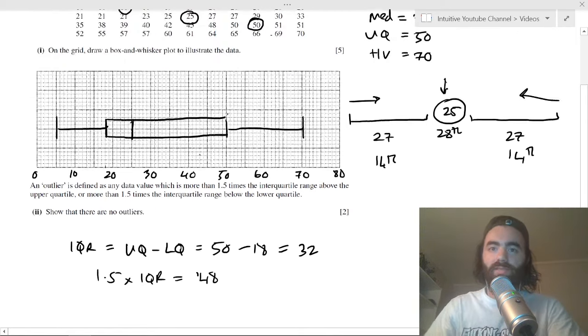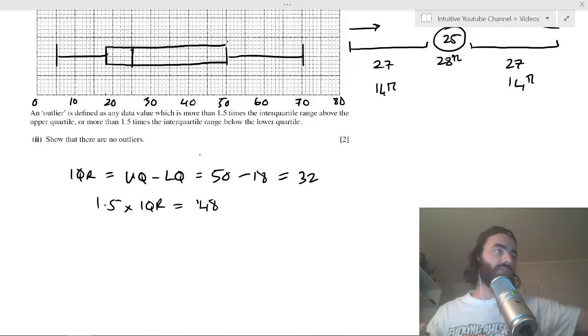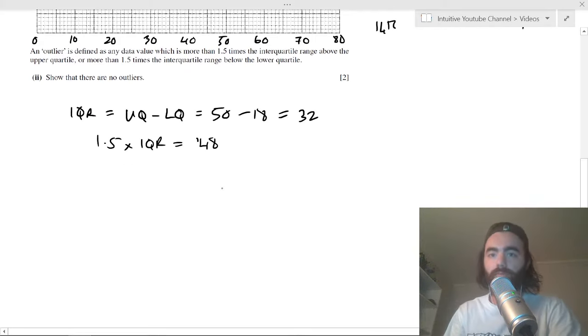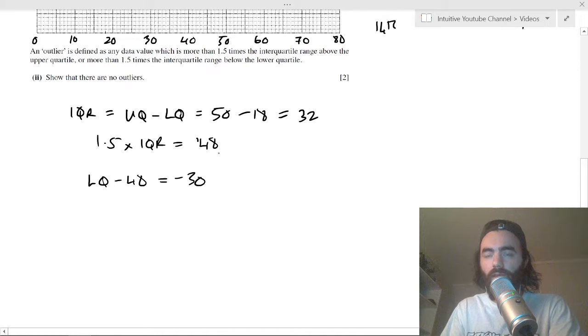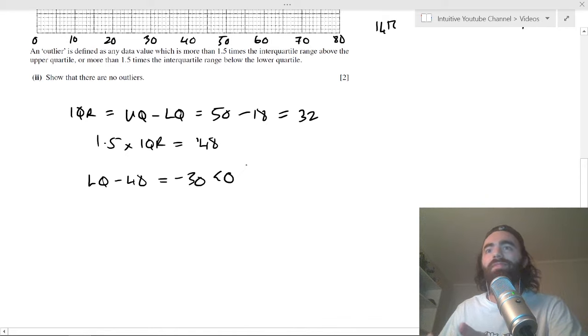An outlier is something where if we have your lower quartile minus 48, if there's data values below that they're considered an outlier. The same goes for your upper quartile. The lower quartile value minus 48 is 18 minus 48, which is minus 30. Is there any data value which is minus 30 or less than minus 30? No, this is less than zero. You can't have someone traveling to school with negative kilometers.